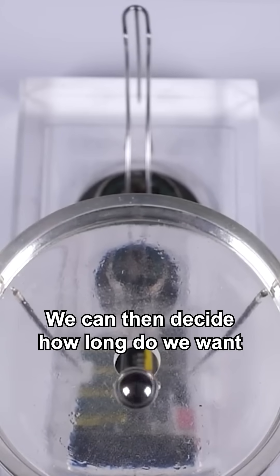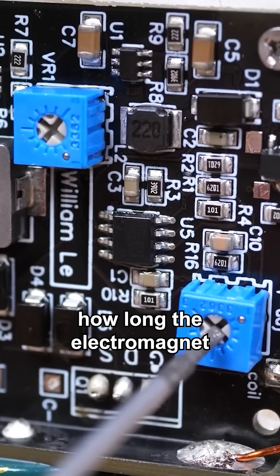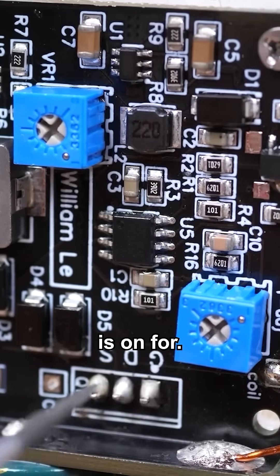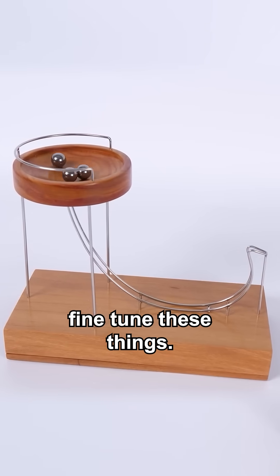We can then decide how long do we want the magnet to be turned on for. These two components allow you to adjust how long the electromagnet is on for. These are important because each one of these devices is handmade, so you need to be able to fine tune these things.